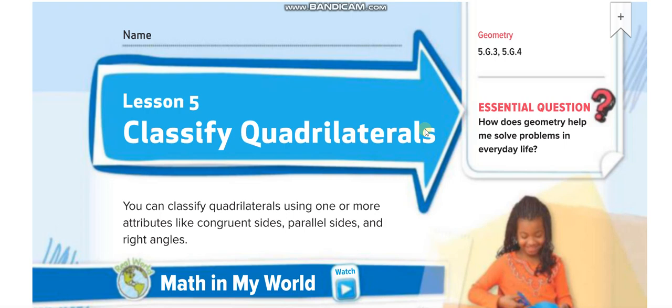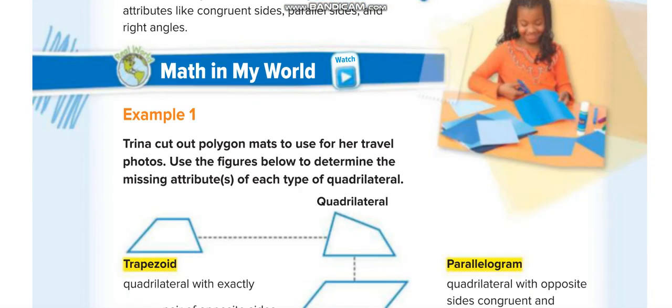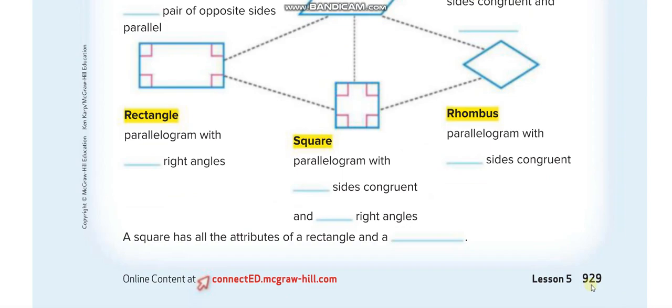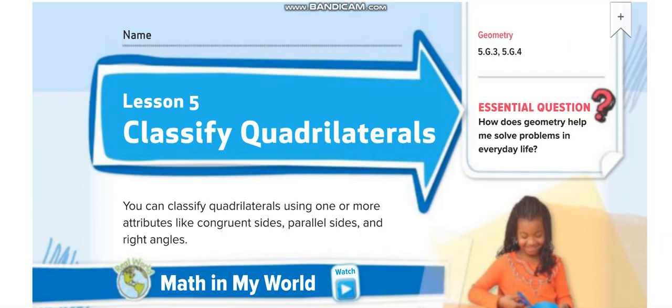Hello everyone, welcome back to another video lesson. Today's lesson is for grade 5, chapter 12, lesson 5: classifying quadrilaterals, on page 929. When we started this chapter on geometry, the first lesson was about polygons — triangles, quadrilaterals, pentagon, hexagon, octagon. We already took triangles, and now we are going to cover quadrilaterals.